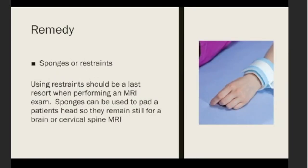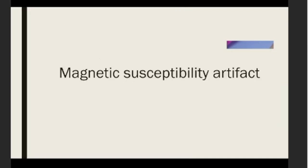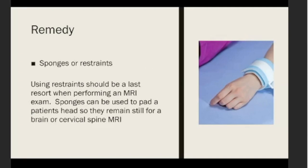Sponges and restraints: the use of restraints should be a last resort when performing an MRI exam and we don't use them that much. However, sponges can be used to cushion a patient's head, which is recommended for brain or cervical spine MRI to hold the patient in the same position throughout. This concludes the section on phase mismapping and ghosting artifacts.